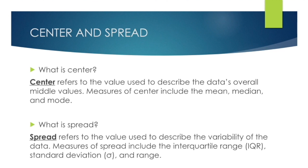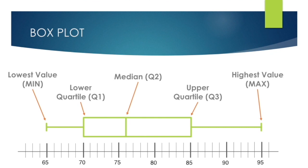Center is the value we use to describe the middle of your data, and spread tells us the variability of that data — how far it is spread out and what the distribution looks like. To describe center we can use the mean, median, or mode. To describe spread we can use the interquartile range, standard deviation (represented by the Greek letter sigma), or the range.